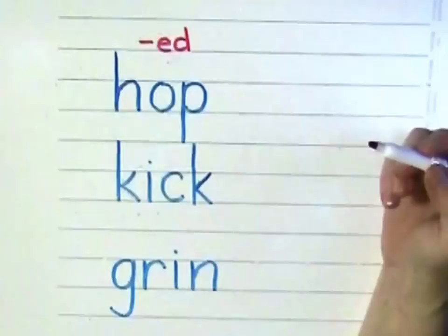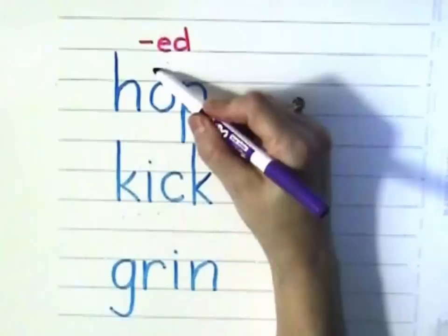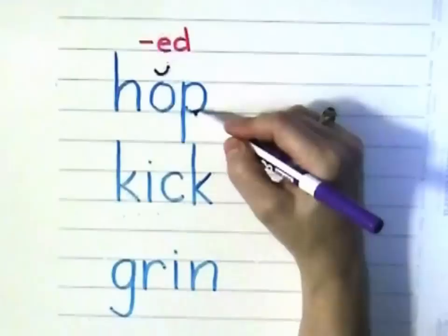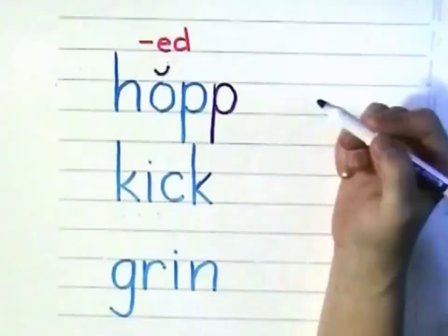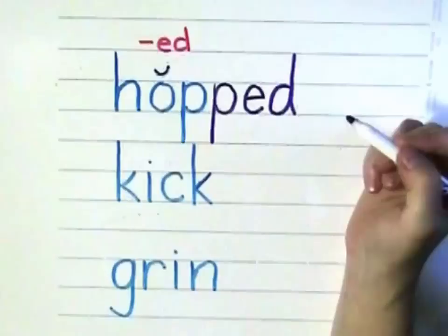Let's add ED to each of these three words. We can't just write ED down the side — we have to think. "Hop" has a short vowel. We can't let it turn into "hoped," so we're going to have to have two consonants. We have one P; we need another. So write the extra P on your paper, and then you may add ED. Now we have "hopped."